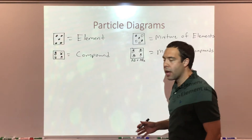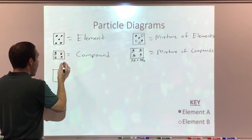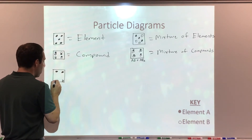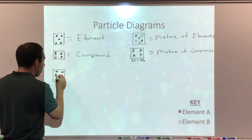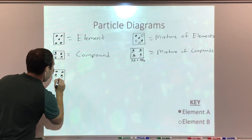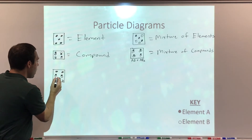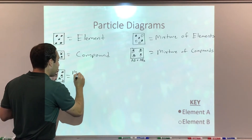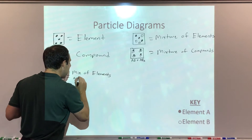And of course I can put these two together — I can have a mixture of elements and compounds. So I take an element: open circle, open circle, open circle, open circle. And I can put a darkened circle and an open circle together, another darkened and open circle, and even one dark and two open. So here I have element A, element A, element B, element B, compound AB, compound AB, and compound AB2 — a mixture of elements and compounds.